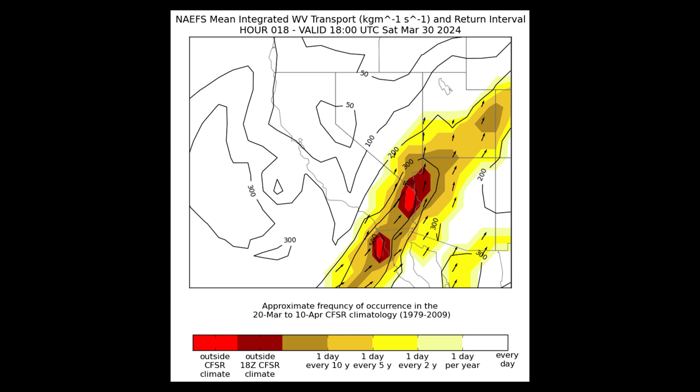This would be something to examine further in the ensemble data in DESI and in the NBM and What's Up, to see what impacts there could be in any fields that would be impacted by above-normal moisture, such as precipitation.